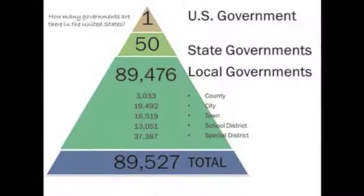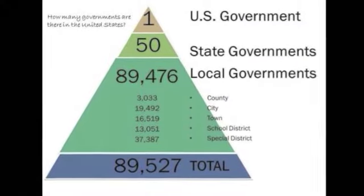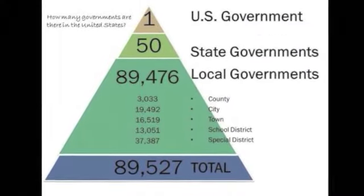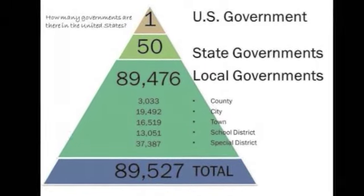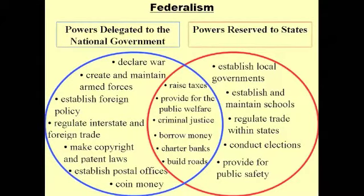So the Constitution came up with a plan known as federalism. Federalism is when you divide powers among national, state, and local governments. In this case, we're really concerned about national and state.